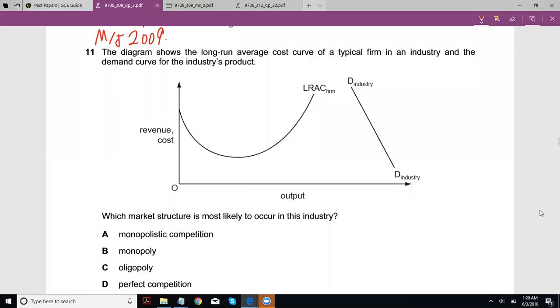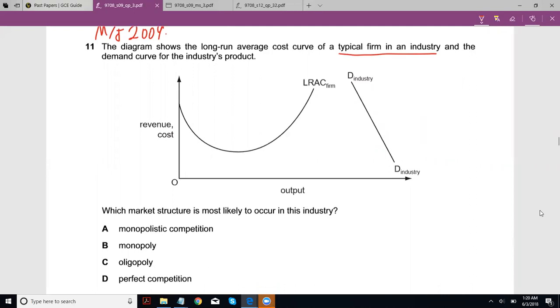We'll be looking at question 11 of May-June 2009. The diagram shows the LRAC curve of a typical firm in an industry and the demand curve for the industry's product. They've asked which market structure is most likely to occur in this industry.